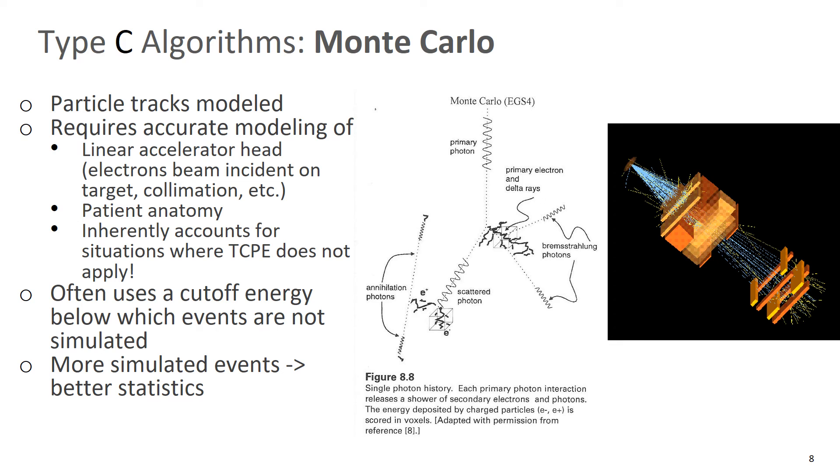It requires accurate modeling of the linear accelerator head and the patient anatomy. It inherently accounts for situations where transient charged particle equilibrium does not apply. So that's a big advantage. One reason why it's the gold standard. It often uses a cutoff energy below which events are not simulated. And more simulated events equals better statistics.